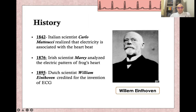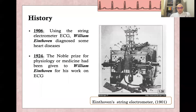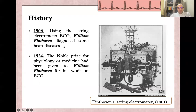In 1895, the godfather of ECG, William Einthoven, was credited for the invention of ECG. This was the first ECG invented by William Einthoven, and in 1906, using the string electrometer ECG, Einthoven began to diagnose some cardiac diseases. In 1924, the Nobel Prize for Physiology and Medicine was given to William Einthoven for his work on ECG.